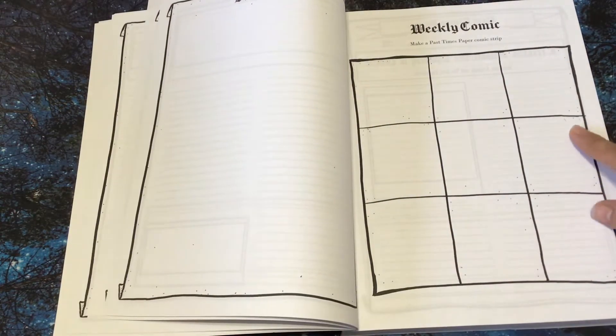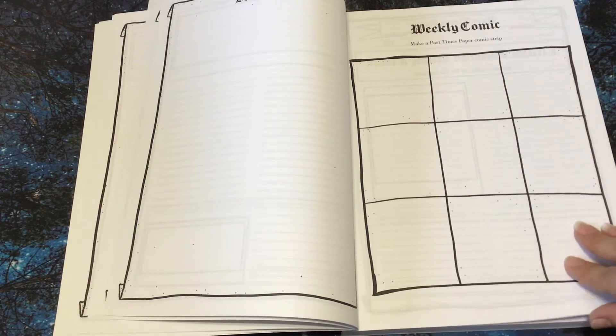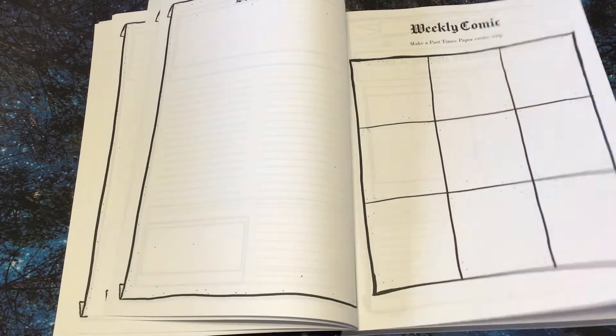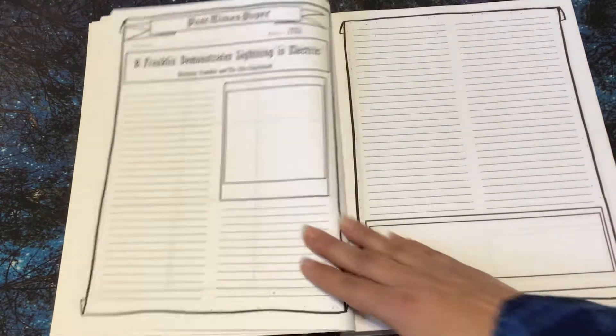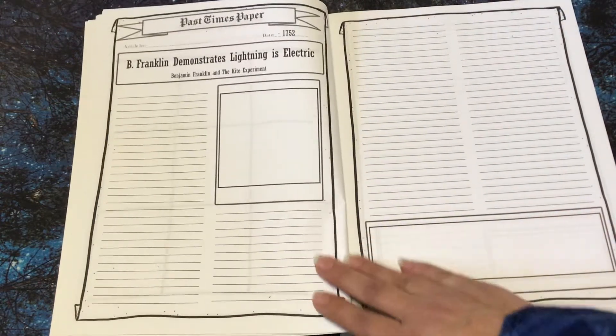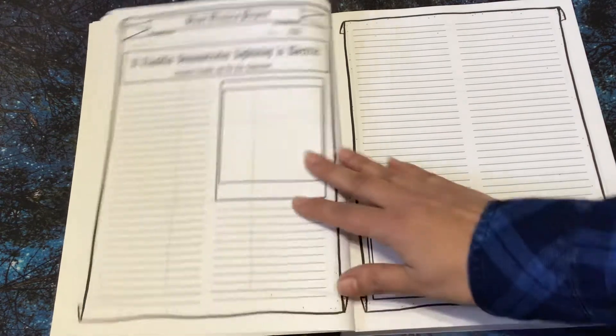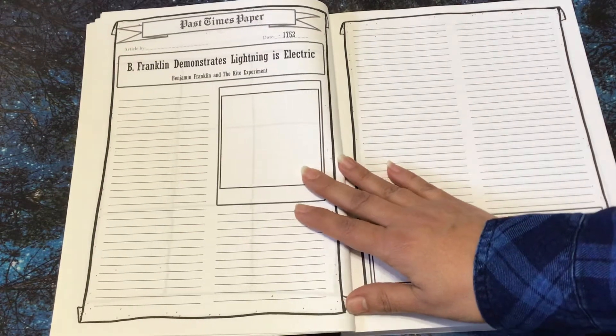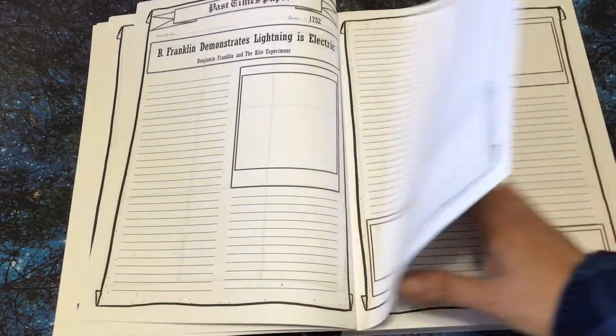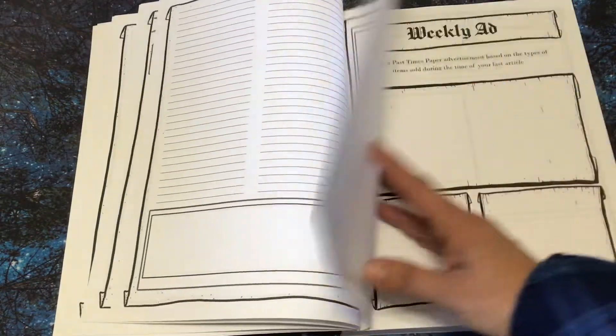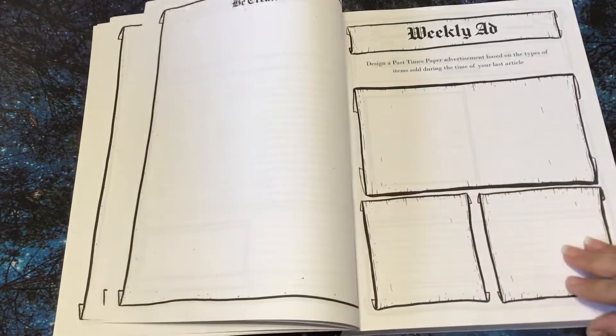Weekly comic. Make a pastime paper comic strip. Oh, that'll be fun. Just make sure it's all in there so you can read something if you like. And this one says Benjamin Franklin and the Kite Experiment. So I'm not going to read everything.